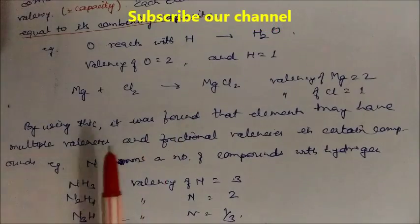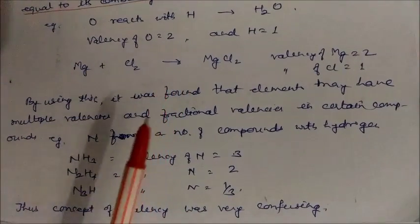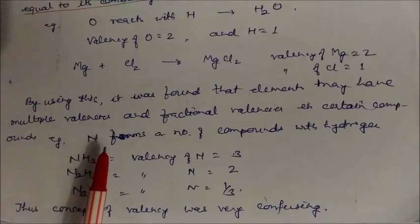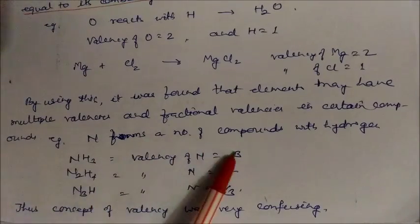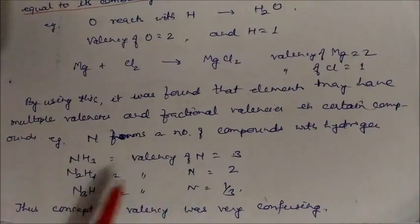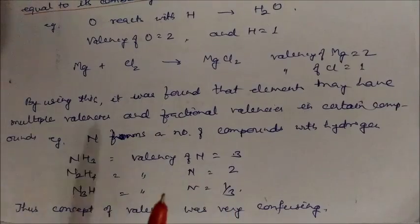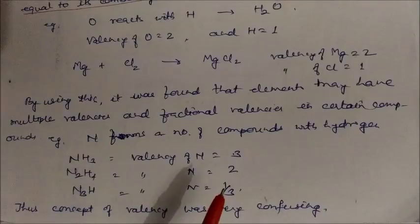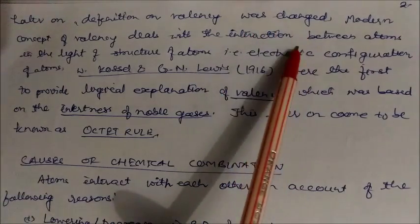However, it was found that elements may have multiple valencies, and this was one major problem with this concept. For example, nitrogen forms a number of compounds with hydrogen: in ammonia the valency is 3, in N2H4 the valency is 2, and in N3H (hydrozoic acid) the valency becomes a fraction of negative 1/3. So the same atom was showing different types of valencies, making the concept of valency totally confusing and unacceptable. Later on, the concept of valency was changed.